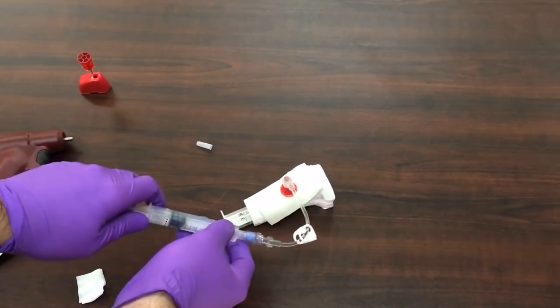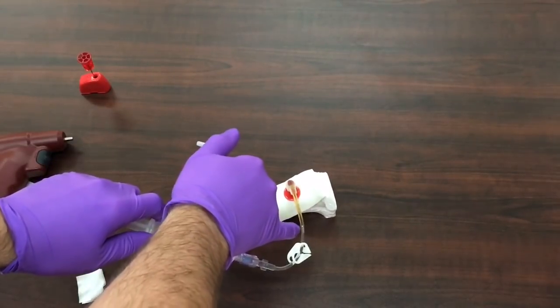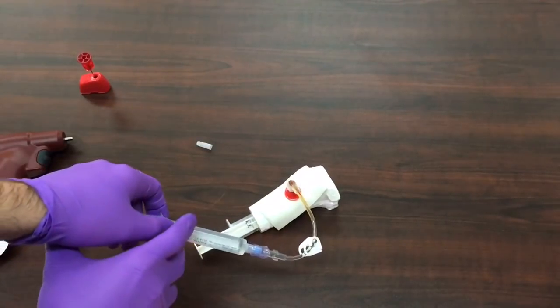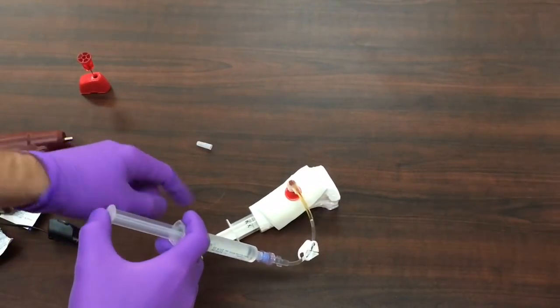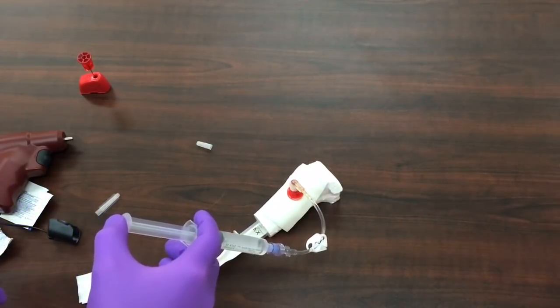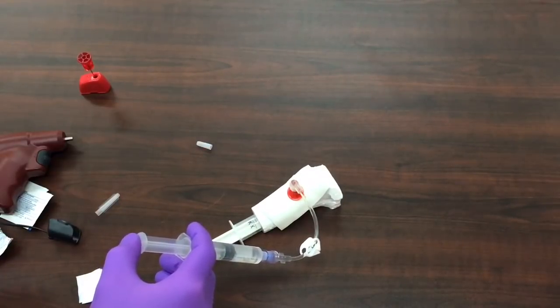Once attached, withdraw to aspirate return of bone marrow. In this case, this is just pancake syrup because that's what I had readily available. But it actually simulates fairly closely the viscosity of blood and bone marrow and then it can be slowly infused.